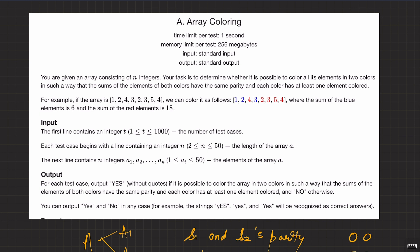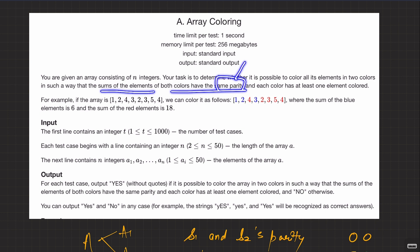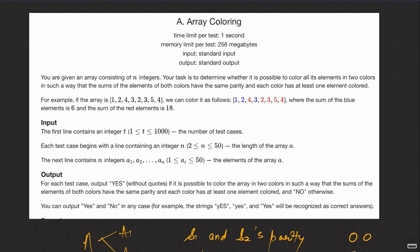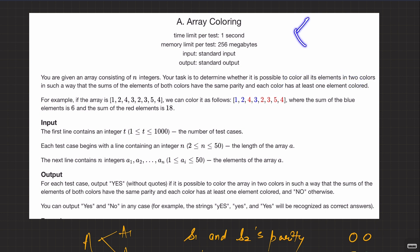Anyway, the question is: you are given an array consisting of integers. The task is to determine whether it is possible to color all the elements in two colors in such a way that the sums of elements of both colors have the same parity — so basically either both even or both odd.